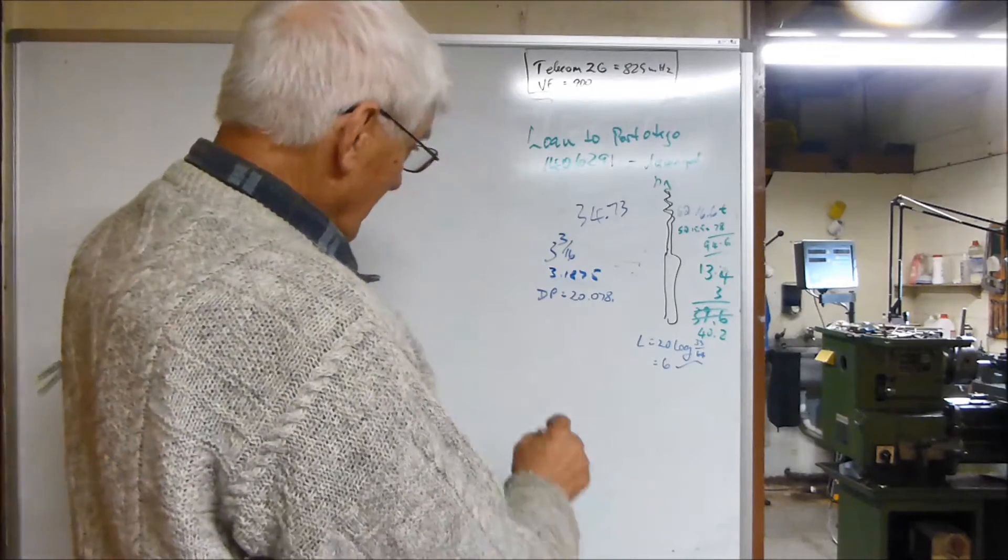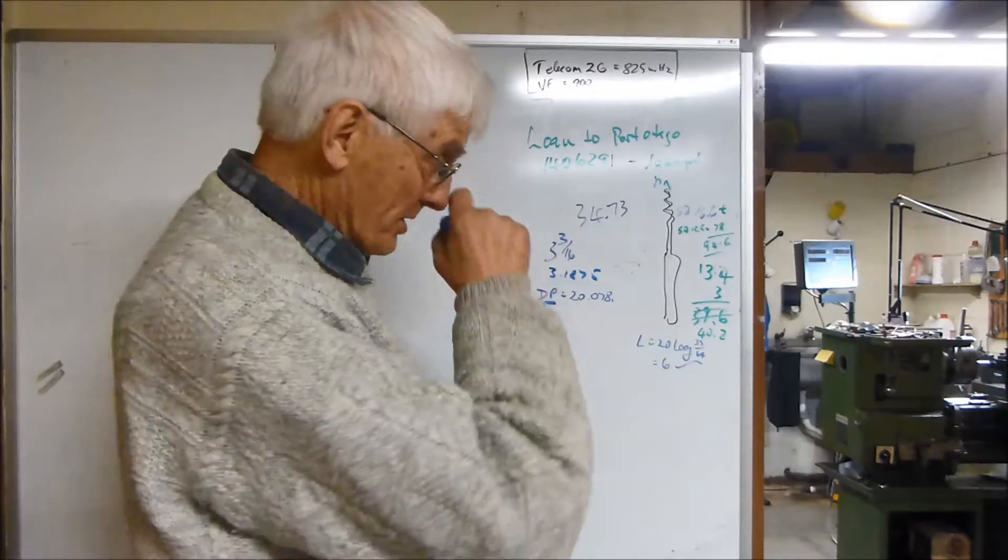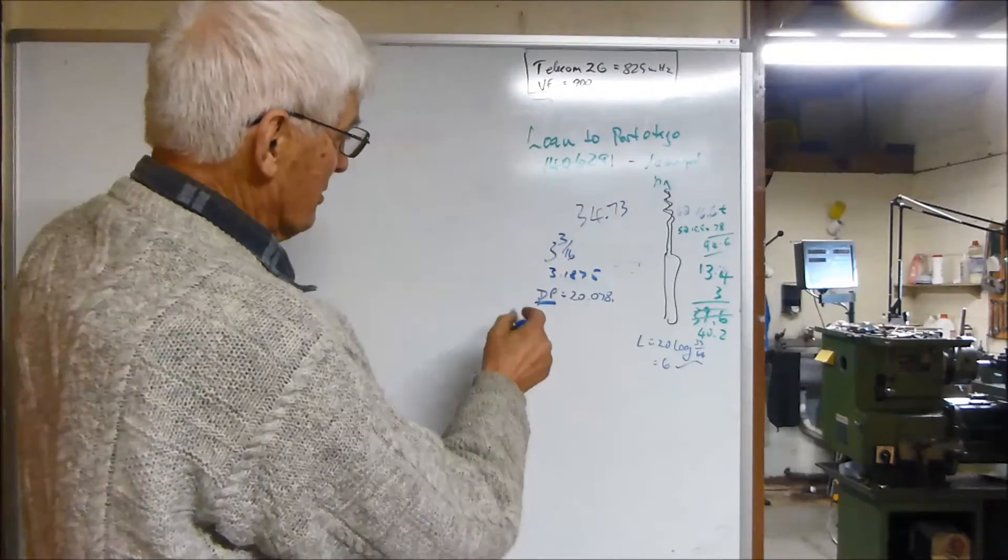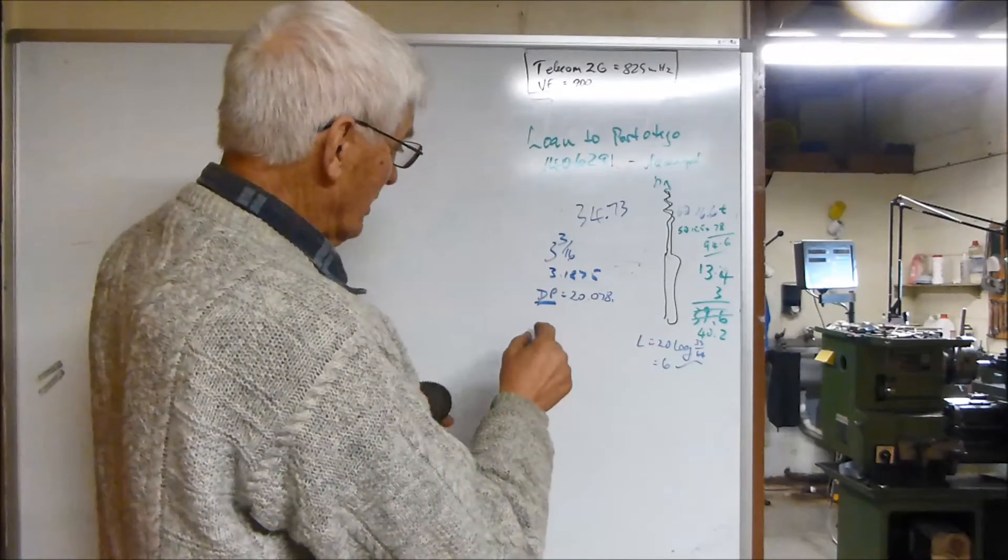The DP or the diametrical pitch is a number that relates to the number of teeth and the diameter of the gear.